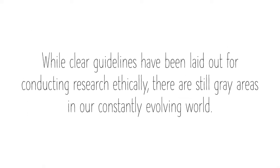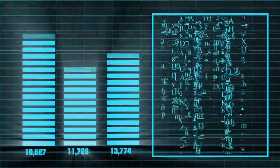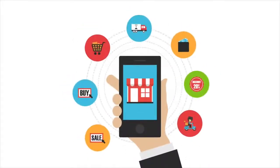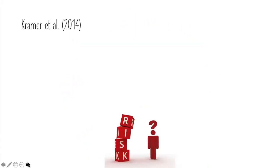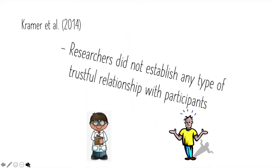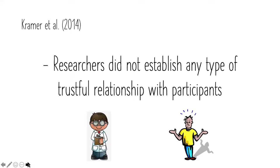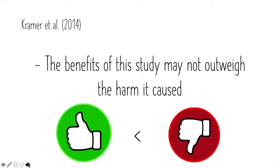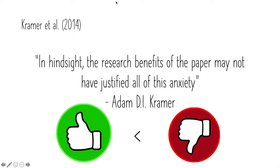While strict guidelines have been put in place to protect participants from the risks of research, the waters can still be murky when conducting research today. For example, a study conducted by Kramer et al. collected data on and attempted to alter the mood of thousands of Facebook users without the users ever even knowing it. Not only was informed consent not received, but the principle of fidelity and responsibility was clearly violated in that no trustful relationship was established. This study could also potentially violate the principle of beneficence, as Kramer himself stated: 'In hindsight, the research of this paper may not have justified all this anxiety.'